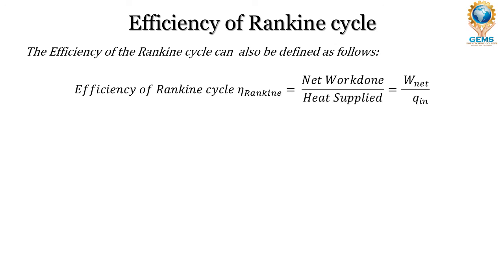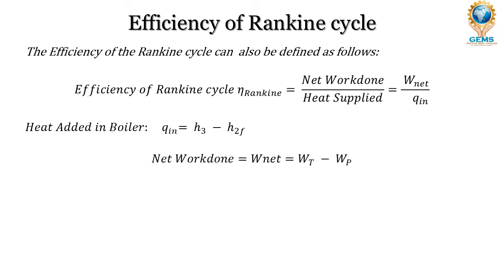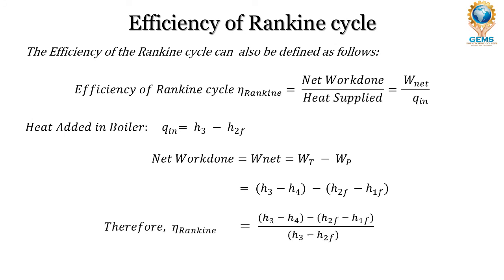The efficiency of the Rankine cycle can also be defined as net work done divided by heat supplied — W_net divided by Q_in. The heat added in the boiler Q_in equals H3 minus H2F. The net work done W_net equals turbine work minus pump work, which is (H3 minus H4) minus (H2F minus H1F). Therefore, the Rankine cycle efficiency is represented by H3 minus H4 minus (H2F minus H1F), divided by H3 minus H2F.